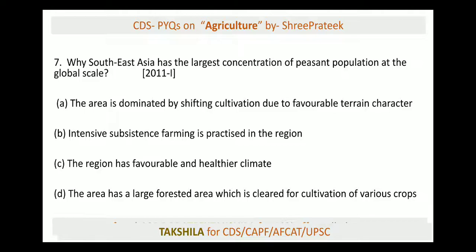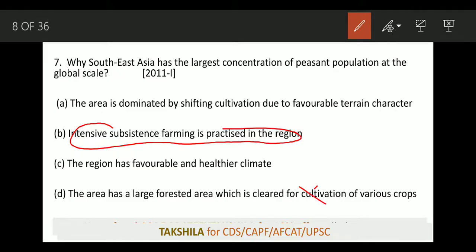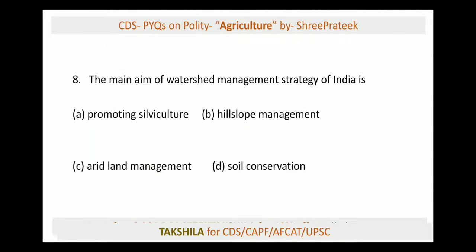Next: why does South East Asia have the largest concentration of peasant population at the global scale? Option A says the area is dominated by shifting agriculture due to favorable terrain. Option B says intensive subsistence farming is practiced in this region. The answer is intensive subsistence farming. In South East Asia, due to very high population and small land holdings, subsistence farming is practiced — meaning farming only for one's own survival with very small land holdings.